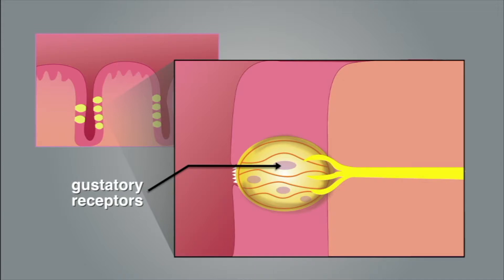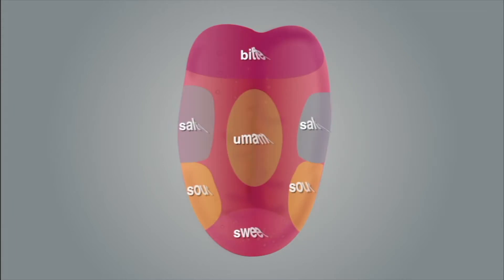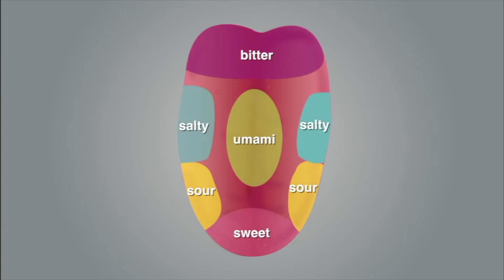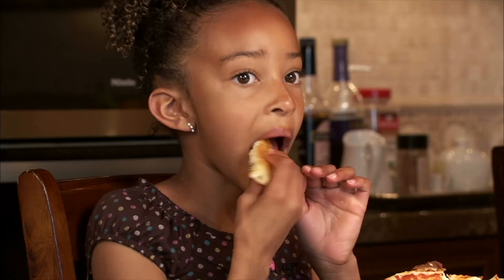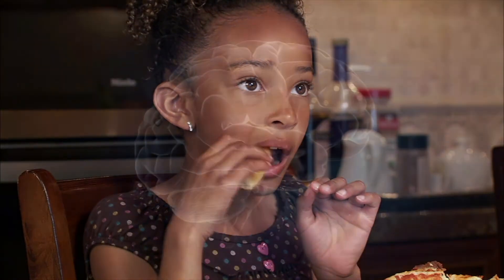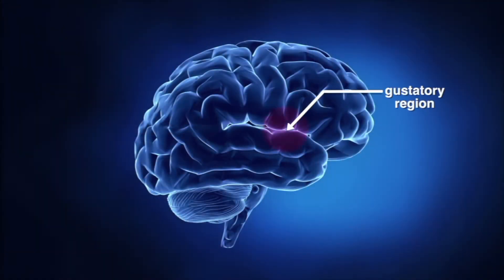The chemicals give rise to several primary tastes: sweet, salty, bitter, sour, and umami, or savory. Some scientists claim that fat is a sixth taste. When a gustatory receptor is stimulated, an electrical impulse is sent to the gustatory region of the cerebral cortex, which registers the signal as taste.